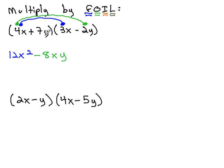I means the two inside terms in the middle get multiplied together, 7y times 3x, which would be positive 21xy.